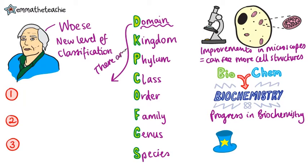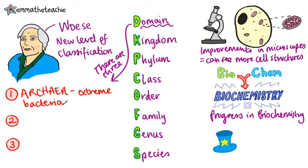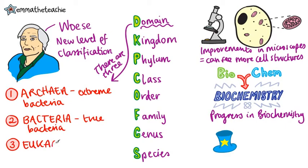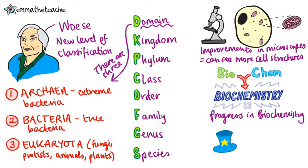Domains can be split into three different groups, and you need to know the names of them. First of all, we've got the archaea — these are primitive forms of bacteria that live in extreme environments, e.g. hot vent bacteria that can survive really high temperatures. The next domain is bacteria, also known as the true bacteria. The third domain is eukaryota. You'll have learned about eukaryotic cells in the first topic of biology, and hopefully you'll remember the four kingdoms: fungi, protists, animals and plants. And if you're wondering about the prokaryotes, archaea and bacteria both encompass these types of cells.